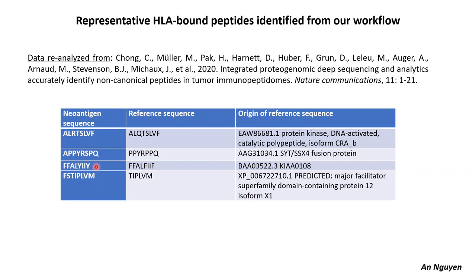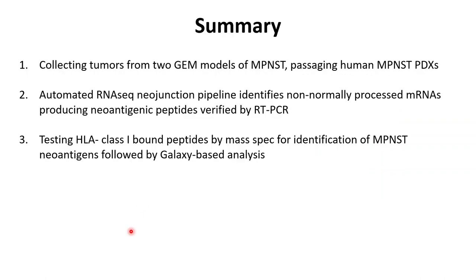We have been applying these bioinformatics tools to some already-published literature data on neoantigens. This is a small representative sample of that data, showing neoantigen sequences that differ quite a bit from predicted reference sequences — and this is the type of data we hope to get from our actual tumor data.